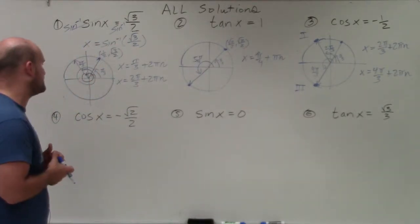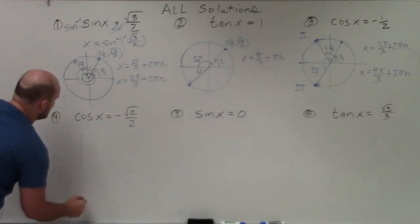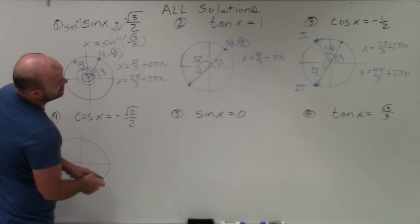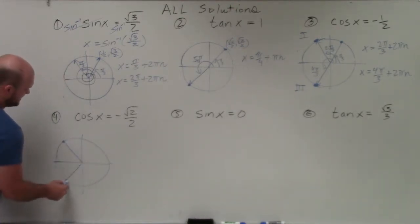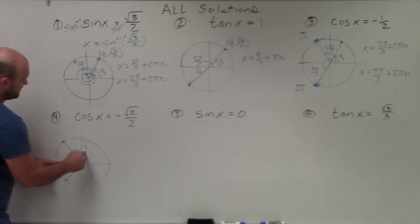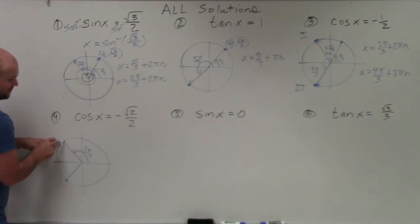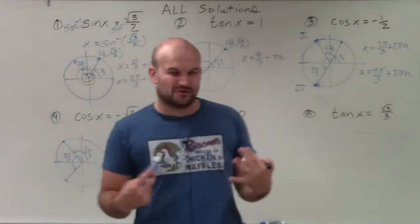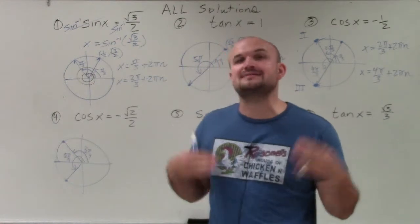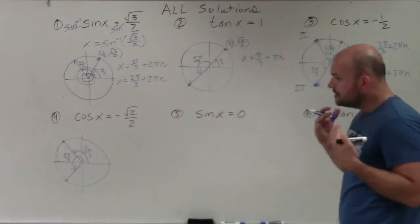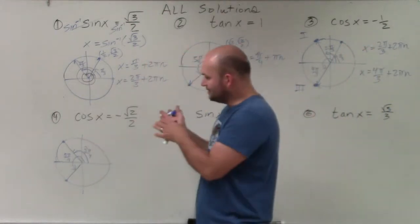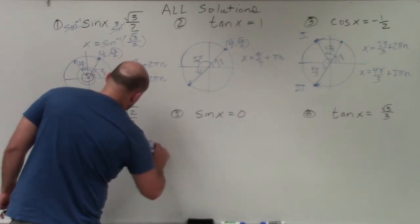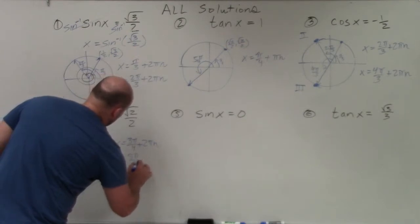Now let's solve cosine of x equals negative square root of 2 over 2. Since I recognize this corresponds to pi over 4, cosine is negative in the second and third quadrants. The angle in the second quadrant is 3 pi over 4, with coordinate negative square root of 2 over 2 comma square root of 2 over 2. In the third quadrant, the angle is 5 pi over 4. So our solutions are x equals 3 pi over 4 plus 2 pi n, and x equals 5 pi over 4 plus 2 pi n.